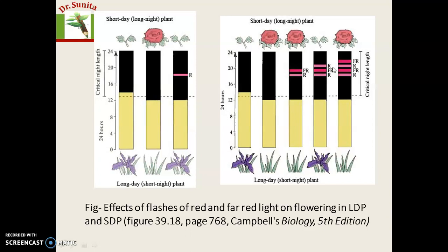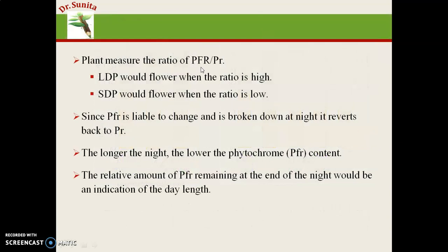If the red flash of light is followed by far-red light, then the short day plant will flower but the long night plant will not flower. The outcome depends on what the last flash of light is — if the last flash is far-red light, the short day plant will flower but the long day plant will not.